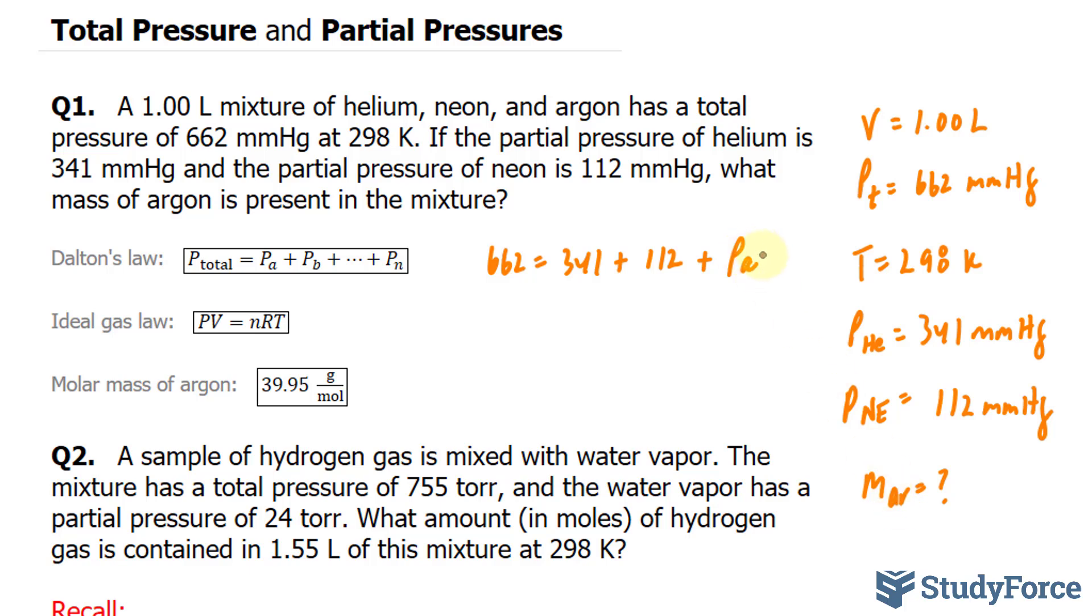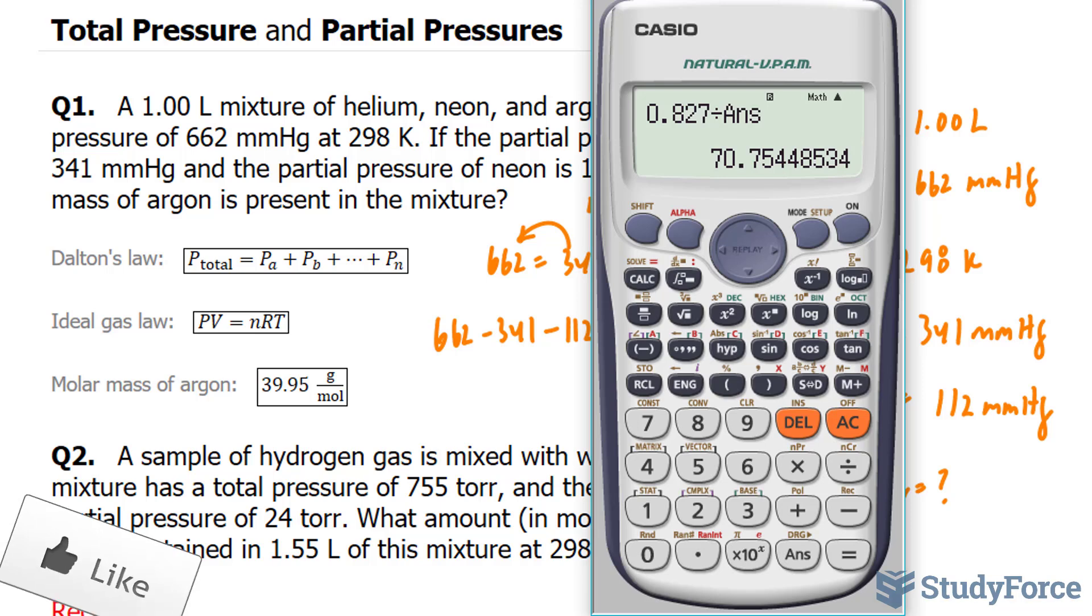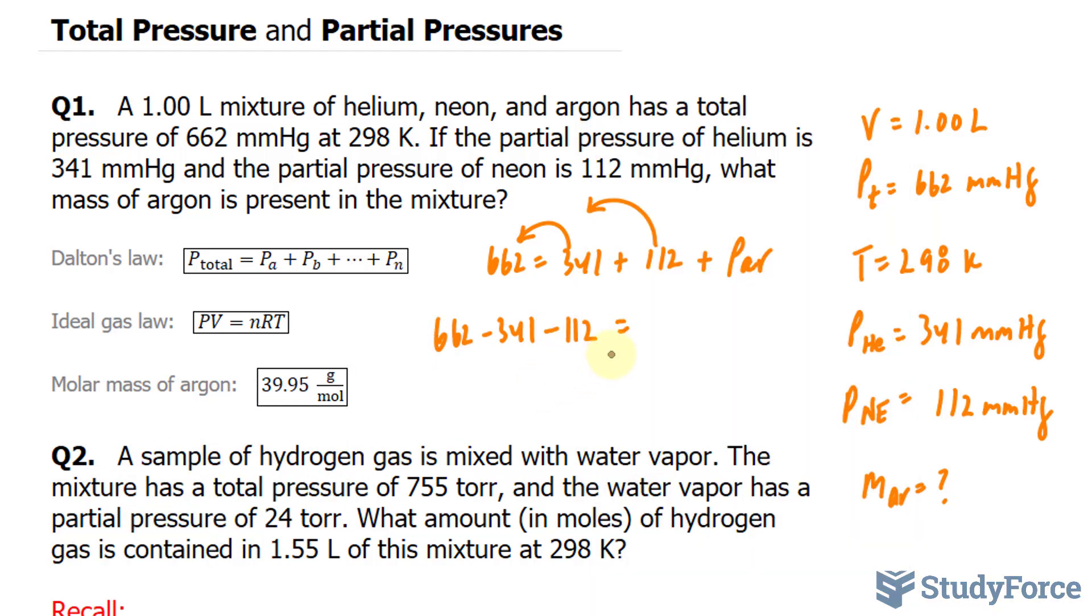And just to be consistent, I'll write down AR. I need to solve for P sub AR, and I'll take this number over and this number over. Where I have 662 minus 341 minus 112 gives us what we're looking for. 662 minus 341 minus 112 gives us 209. 209, and that is the partial pressure of Argon.